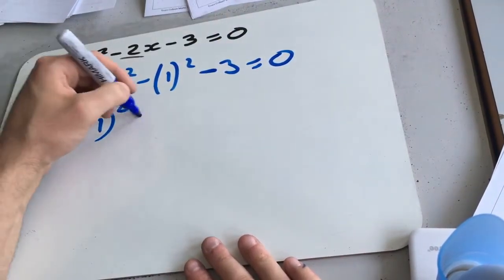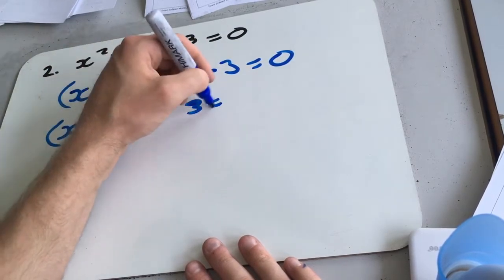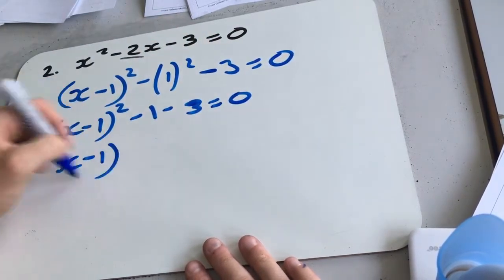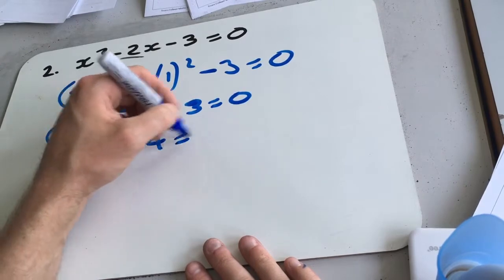x minus 1 squared, take 1, take 3, equals 0. So x minus 1 squared minus 4 equals 0.